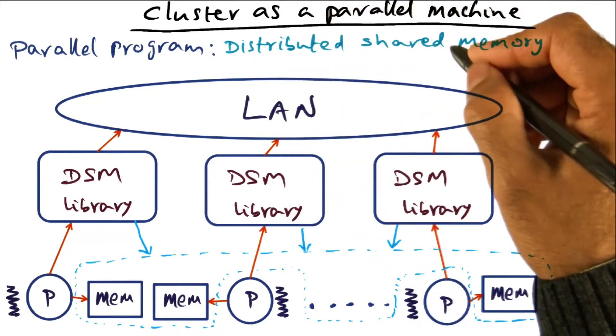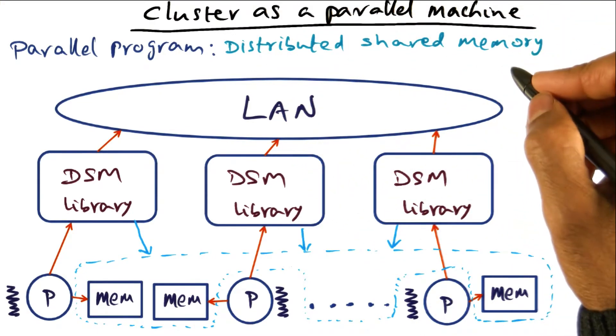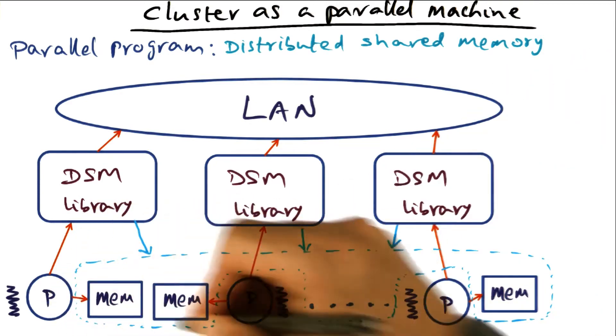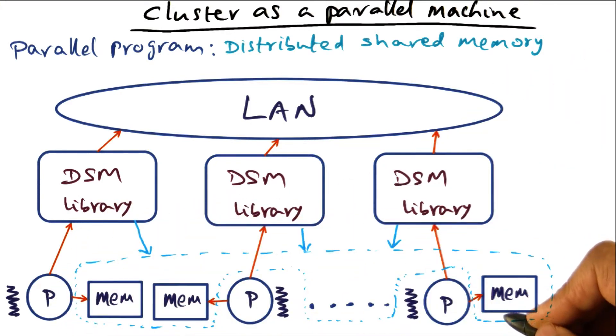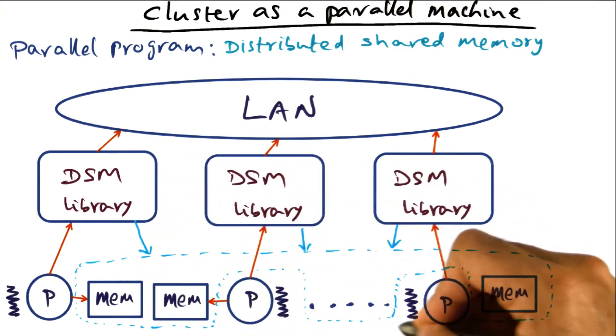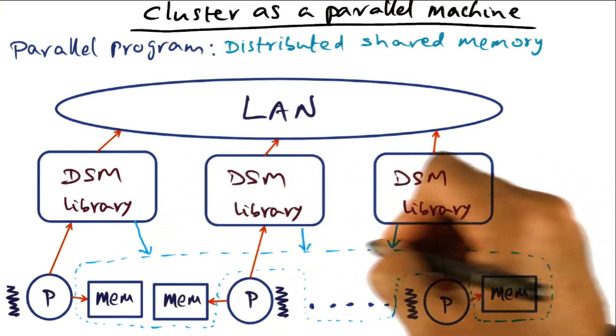This was the motivation for coming up with the abstraction of distributed shared memory in a cluster. The idea is that we want to give the illusion to the application programmer writing an explicitly parallel program that all of the memory in the entire cluster is shared.